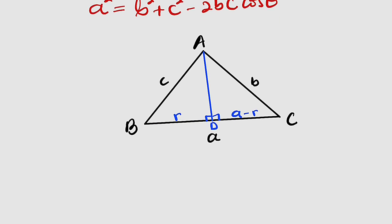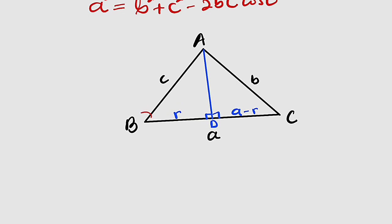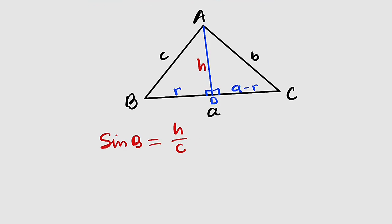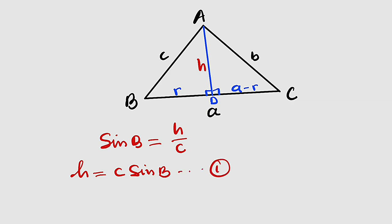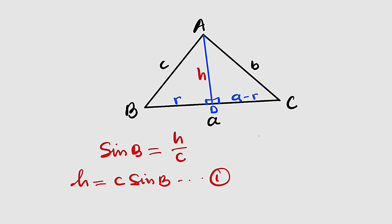The first step is to find the sine and cosine of angle B. Sine of B equals opposite divided by hypotenuse. The opposite is the height h, so sine B equals h divided by c. Multiplying both sides by c gives h equals c times sine B. Let me call this equation number one.